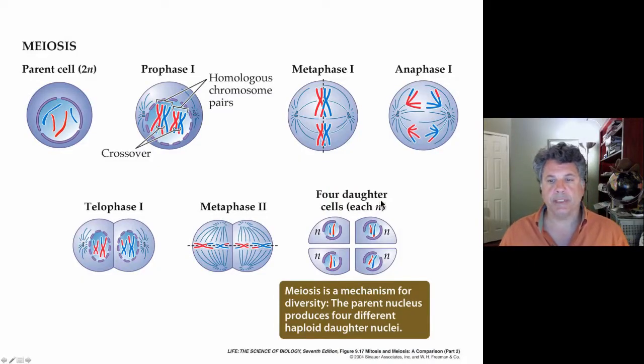All right, we left off talking about meiosis and we're going to talk about some of the problems that arise if the segregation of chromosomes in meiosis is defective.